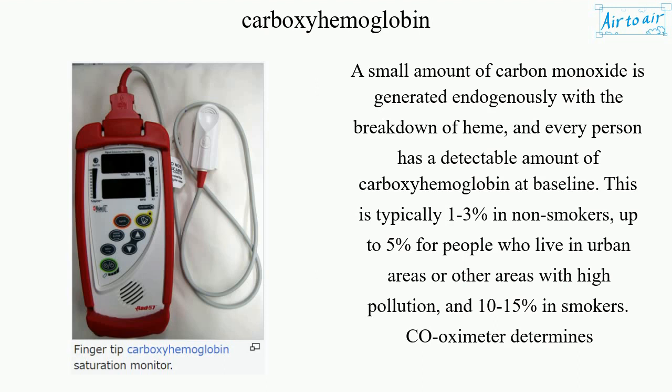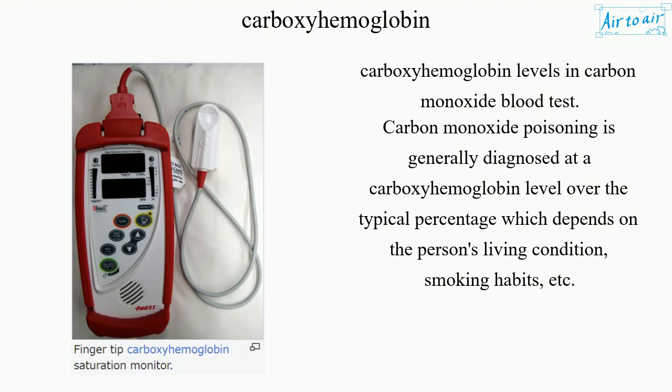A co-oximeter determines carboxyhemoglobin levels in a carbon monoxide blood test. Carbon monoxide poisoning is generally diagnosed at a carboxyhemoglobin level over the typical baseline percentage, which depends on the person's living conditions, smoking habits, etc.